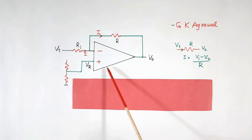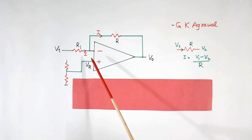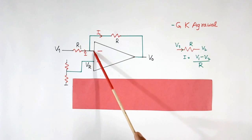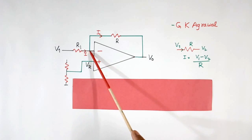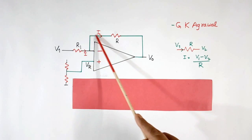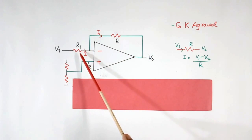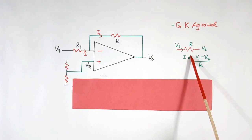According to the first rule, the voltage at the negative input point will be equal to the positive input voltage. If the positive input is Vr, the voltage at the negative terminal also becomes Vr. Now for the second rule, we will calculate the current through the input resistor and the current through the feedback resistor, and we will make both currents equal. To calculate the current, I explain here.